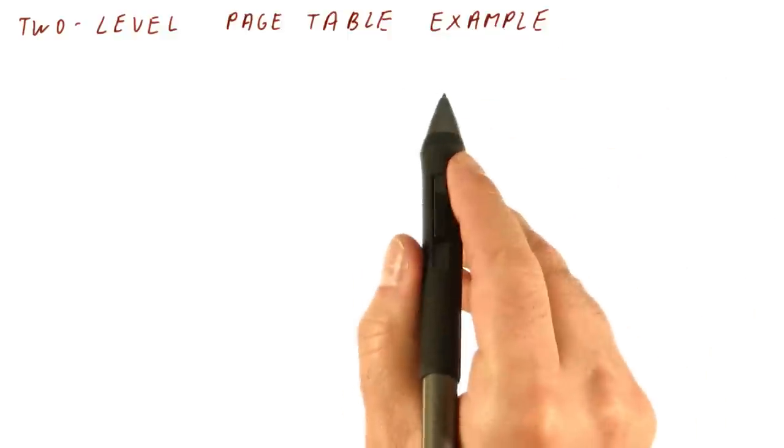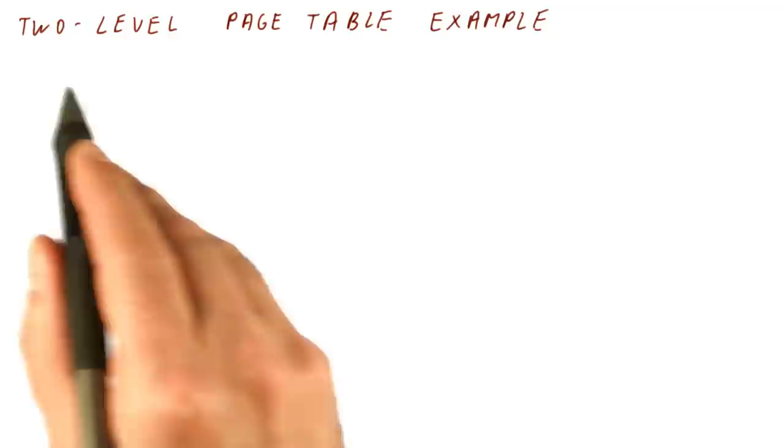To understand how the multi-level page table saves space, let's look at an example of a simple and small two-level page table.